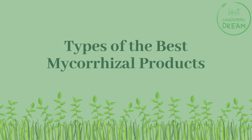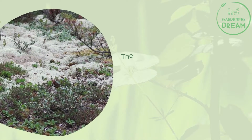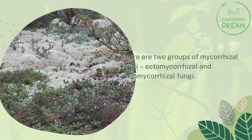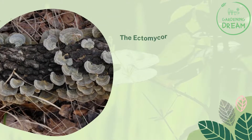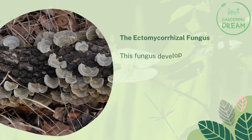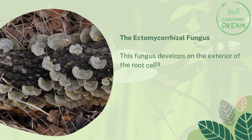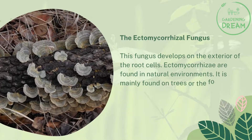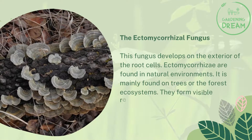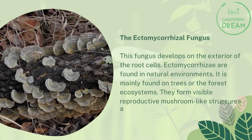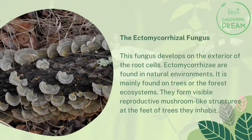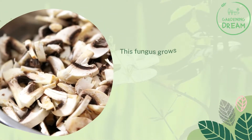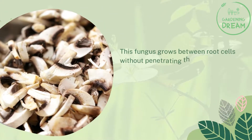There are two groups of mycorrhizal fungi: ectomycorrhizal and endomycorrhizal fungi. The ectomycorrhizal fungus develops on the exterior of the root cells. Ectomycorrhizae are found in natural environments, mainly on trees or in forest ecosystems. They form visible reproductive mushroom-like structures at the feet of the trees they inhabit, and this fungus grows between root cells without penetrating them.